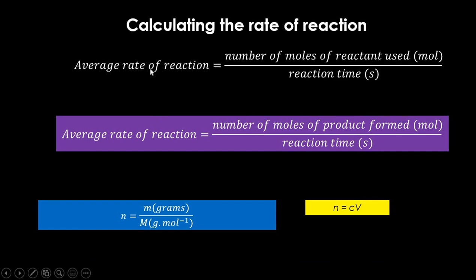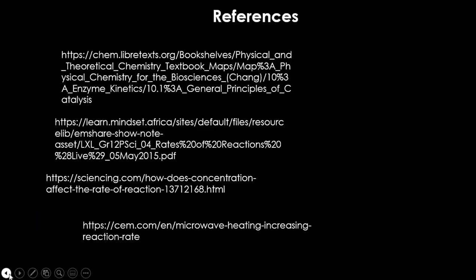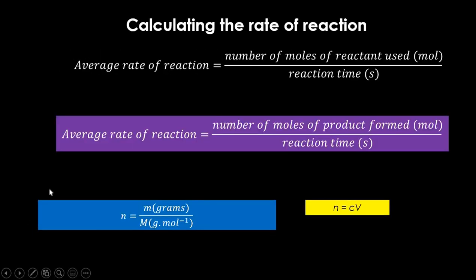To calculate the average rate of reaction: it equals the number of moles of reactant used divided by the reaction time, or equivalently, the number of moles of product formed divided by the reaction time. Depending on the information given, you can use either expression to work out the average rate of reaction. This marks the end of our lesson today — thank you for watching, I hope this was helpful.